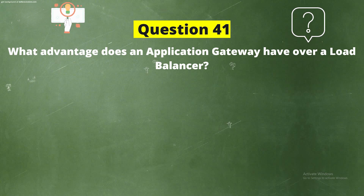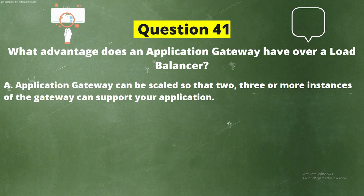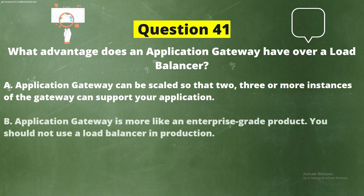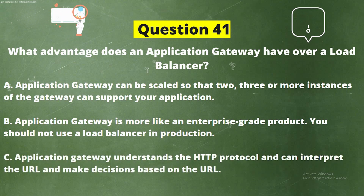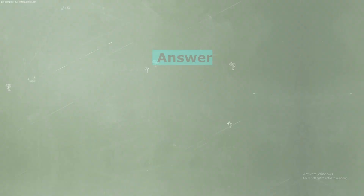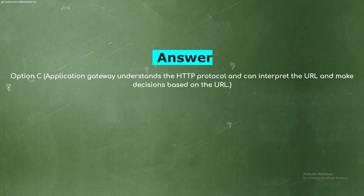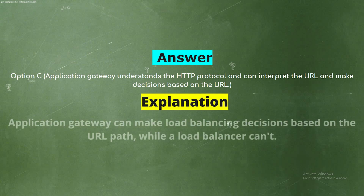Question 41: What advantage does an Application Gateway have over a Load Balancer? Options: Option A, Application Gateway can be scaled so that two or more instances of the gateway can support your application; Option B, Application Gateway is more like an enterprise-grade product and you should not use a load balancer in production; Option C, Application Gateway understands the HTTP protocol and can interpret the URL and make decisions based on the URL. The correct answer is Option C.